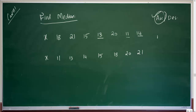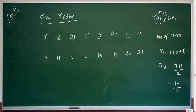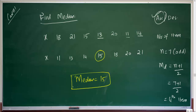Now we look at the number of items, because depending on the number of items our formula will change. Here the number of items is 7, so n = 7, which is an odd number. When n is odd, median is the (n+1)/2th item, which is (7+1)/2 = 8/2 = 4th item. The fourth item in our arranged series is 15, so median equals 15. This is how we find median for individual series data with an odd number of observations.